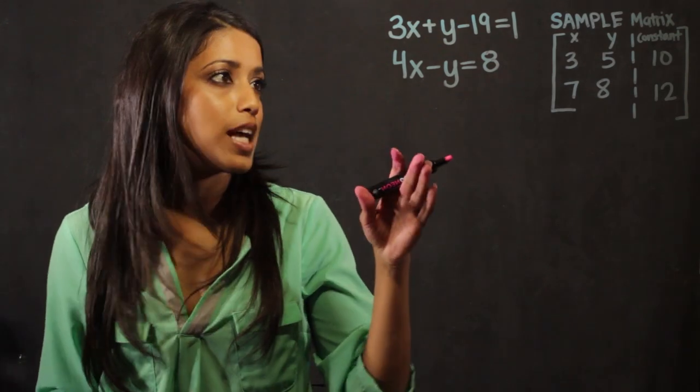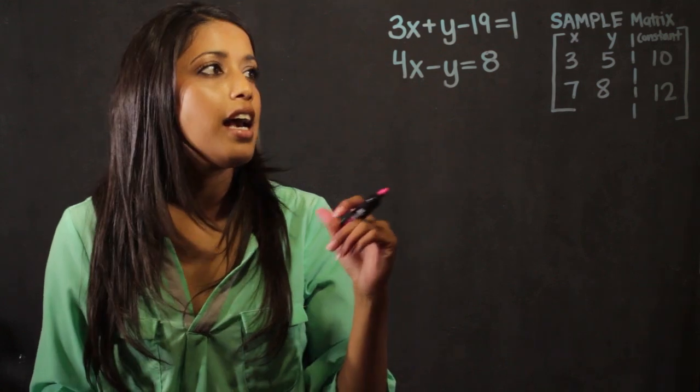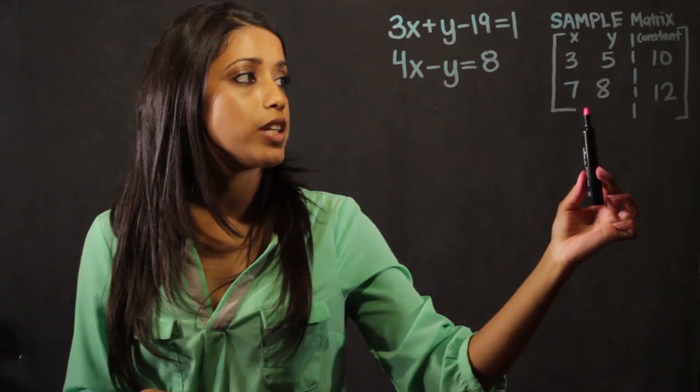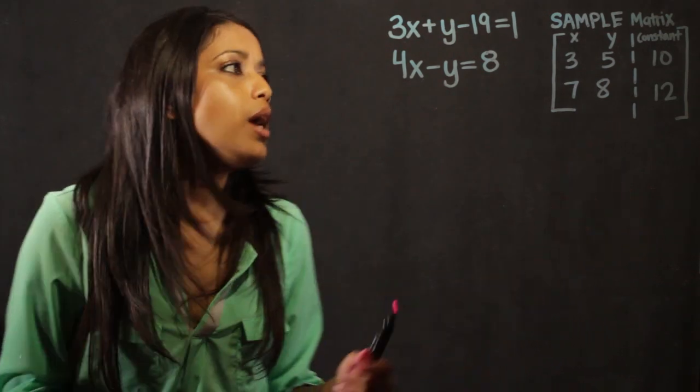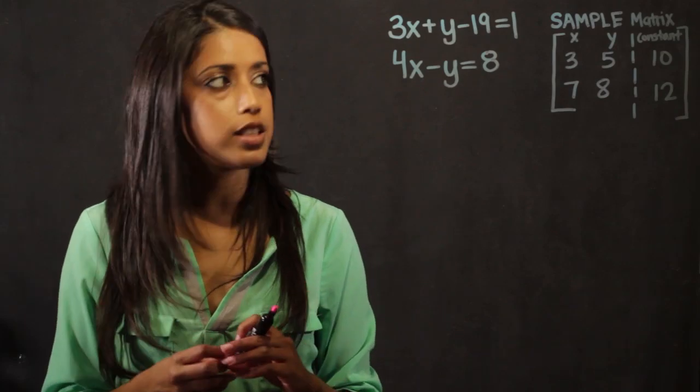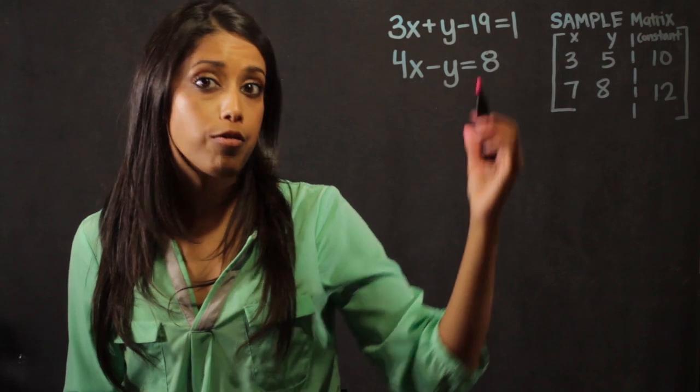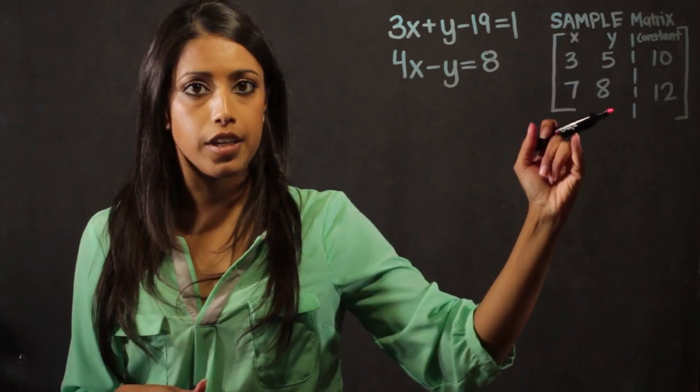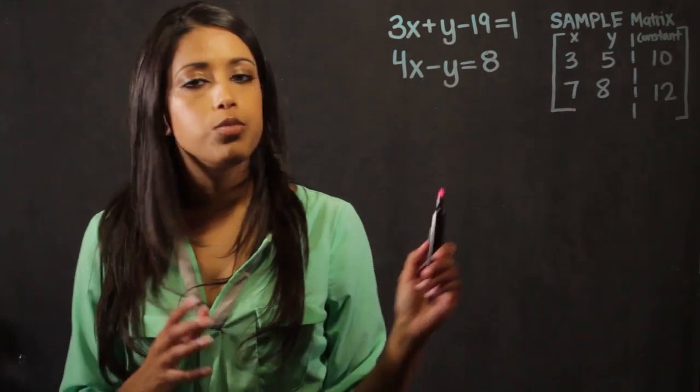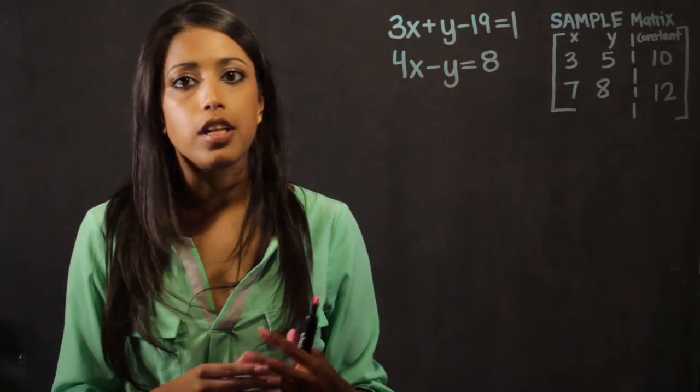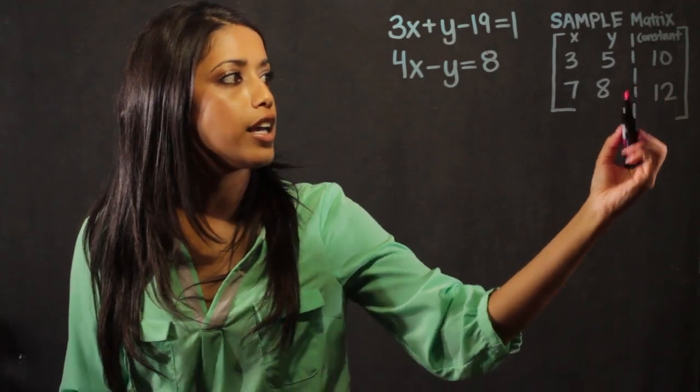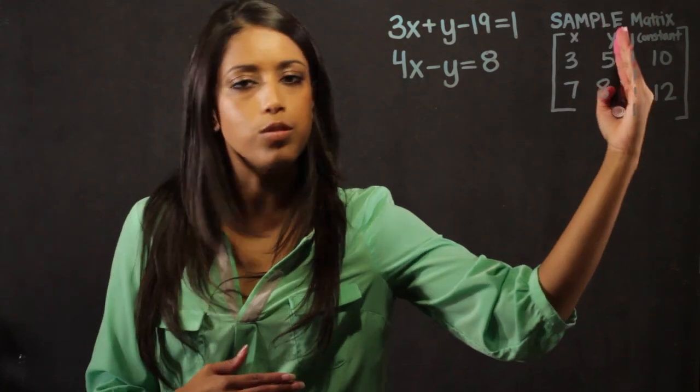First off, I have my first example over here to my right. I have two different equations. You can see them here and here. And I also have a sample matrix over here to my right. A matrix is essentially a way of organizing information from linear equations. We put all of the numbers that are in front of the x in a column here, and we put all of the numbers that are in front of the y's in a column here. We also move any constants, which is a number that has no variable attached to it, to the last column, and we used a dashed line here to represent that those don't change.